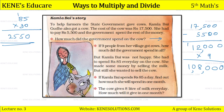The cow gives 8 liters of milk every day. How much milk will it give in one month? For 30 days: 30 multiplied by 8 gives 240 liters. So the cow will give a total of 240 liters of milk in one month.